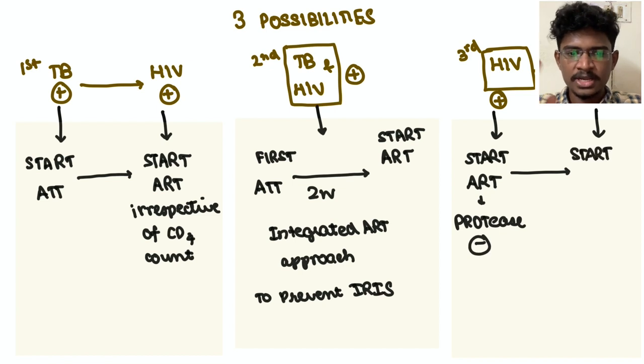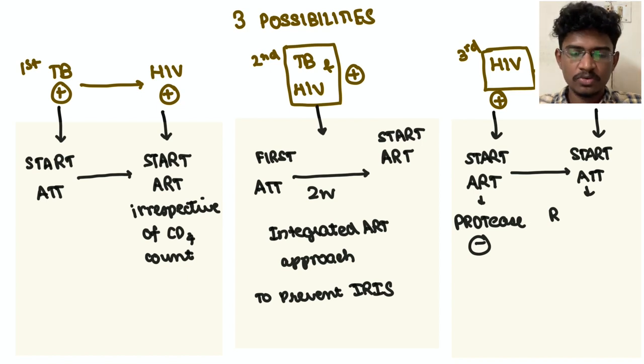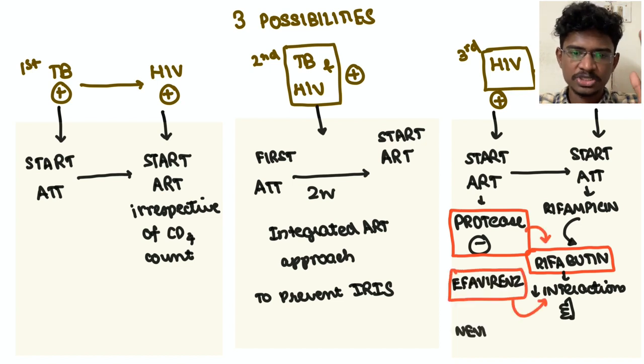So to prevent this, first give ATT to suppress the rapidly proliferating mycobacterial species, then you can start with ART. Next possibility: patient already known HIV patient now he has developed TB. Known HIV patient you will be giving ART, and now you have developed TB, so here you should be giving ATT. But you know that protease inhibitors are CYP3A4 inhibitors and rifampicin is inducer. So these two can't be given together. So what you should do is you should change from rifampicin to rifabutin. This interaction won't be there. Or if the patient is on nevirapine or efavirenz, you should change rifampicin to rifabutin.